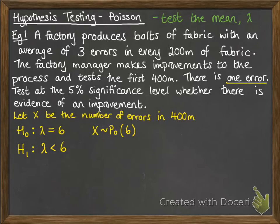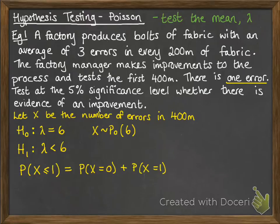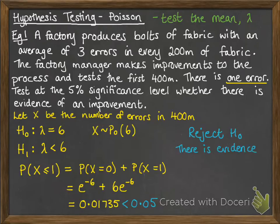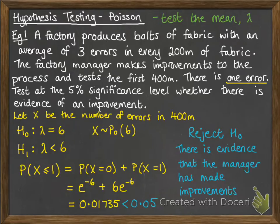The test value is one error. We test whether that gives a probability less than 5%. We calculate P(X ≤ 1), adding together the probabilities for 0 and 1 using the Poisson formula, and we get 0.01735, which is 1.7%. That's less than 5%, so we can reject the null hypothesis. There is evidence to suggest that the manager has made improvements to the process of producing the fabric.